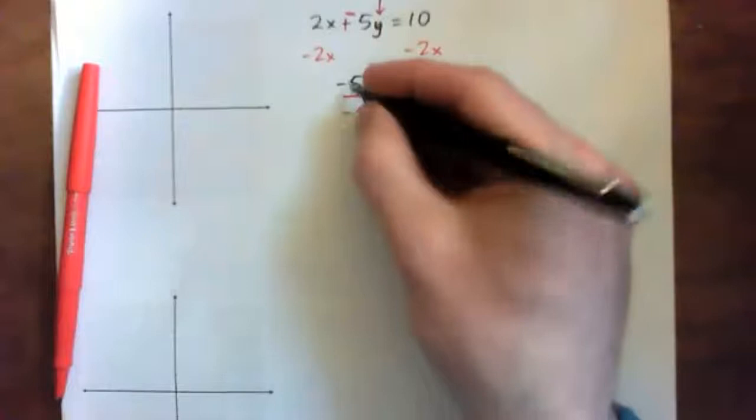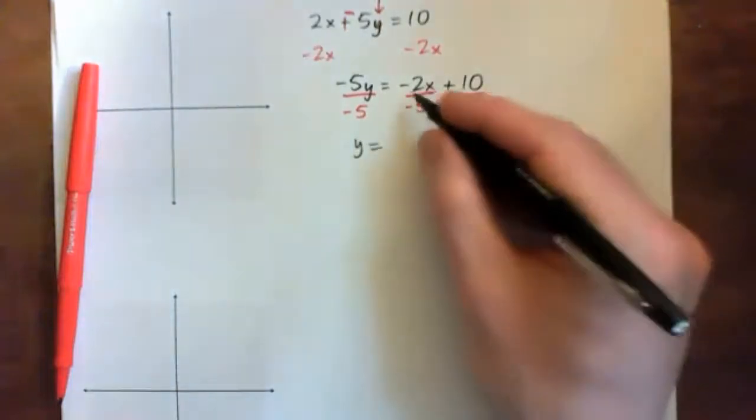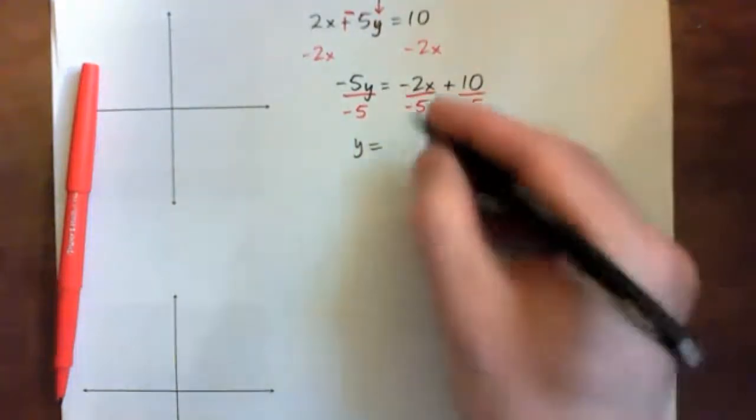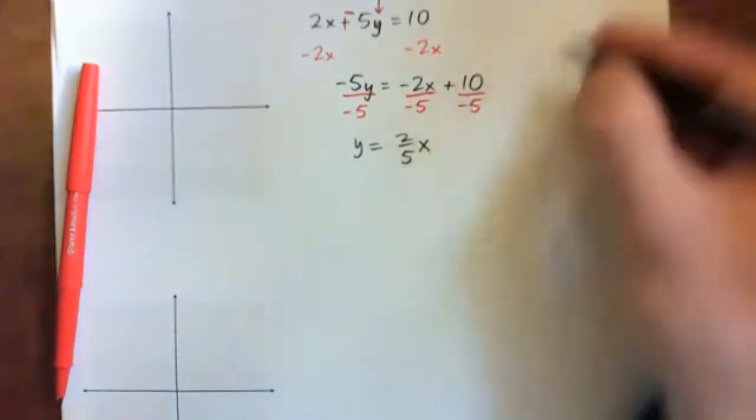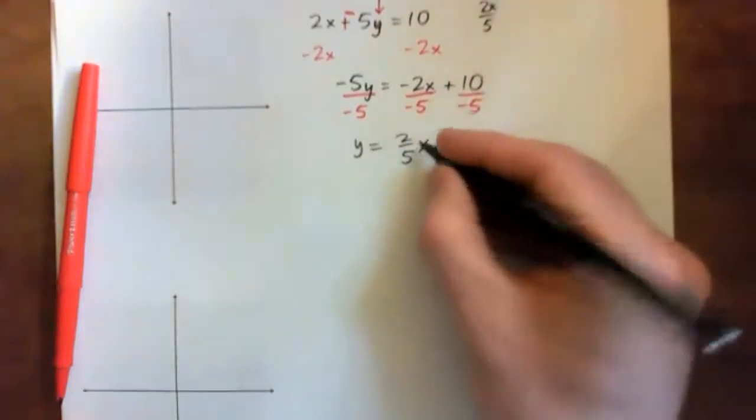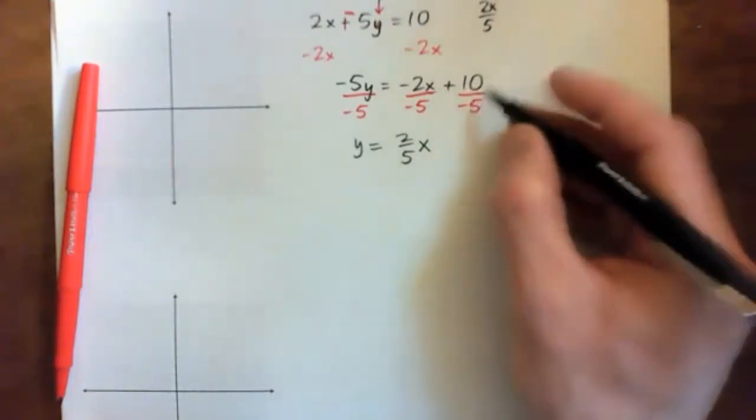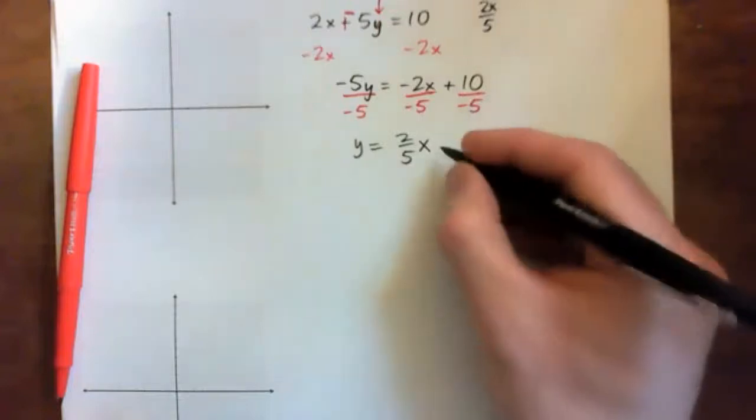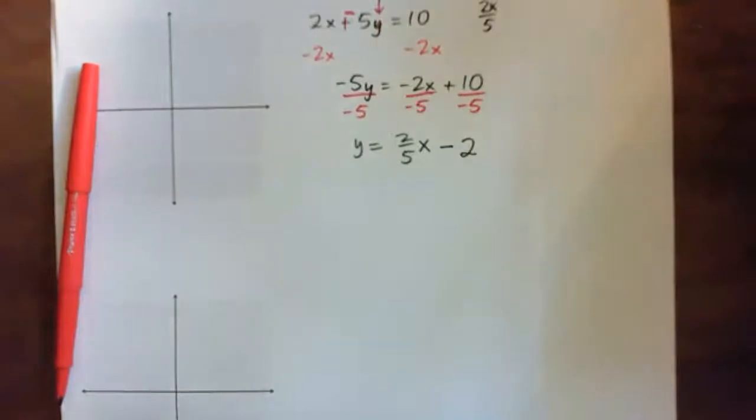So, that gives us negative over negative positive. 5 over 5 is 1. So, 1y or y equals negative over negative positive 2 over 5, 2 fifths x. Or you can write 2x over 5. But it's the same thing. 2x over 5, 2 fifths x, same thing. And then plus 10 over negative 5. That's a positive over negative. That makes a negative 10 over 5, 2. So, any questions up to here?